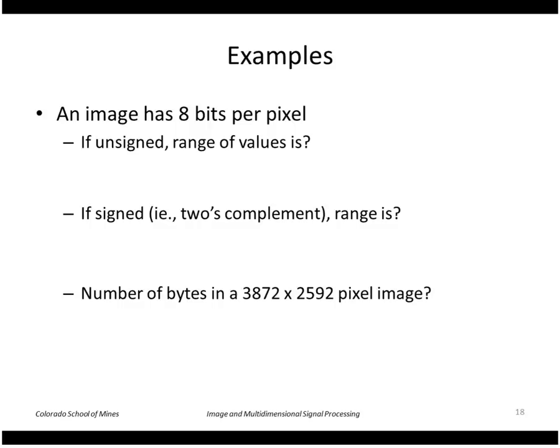So an example here, we can do some calculations on the range of values. So if we have an 8 bit per pixel image unsigned, the range of values is 0 to 2 to the n, that's the number of bits, minus 1. So that is 0 to 2 to the 8th minus 1, or 0 to 255.